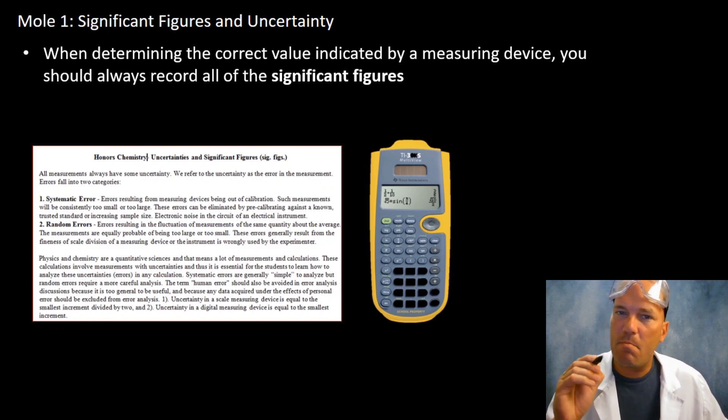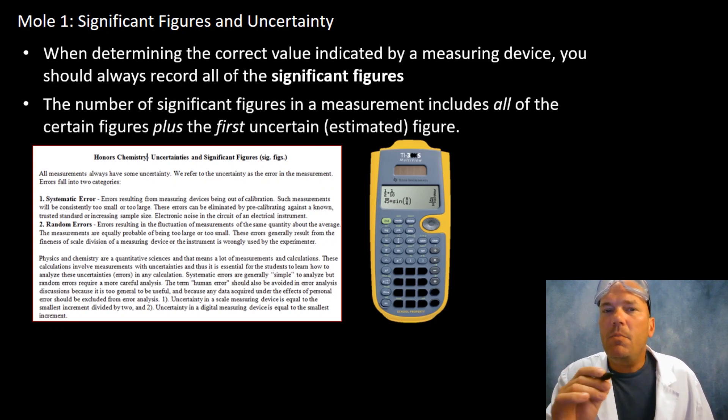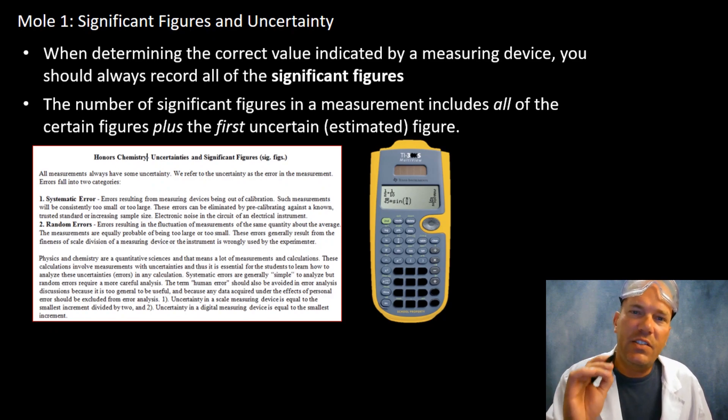Point number one: when I talk about significant figures we are talking about something measured on a device. These are real numbers based on the instrumentation being used - that ruler, that burette, that graduated cylinder, that analytical balance. The number of significant figures always includes some degree of uncertainty.